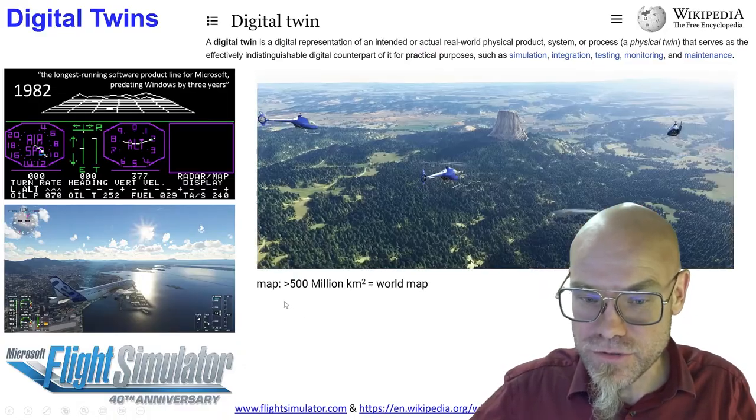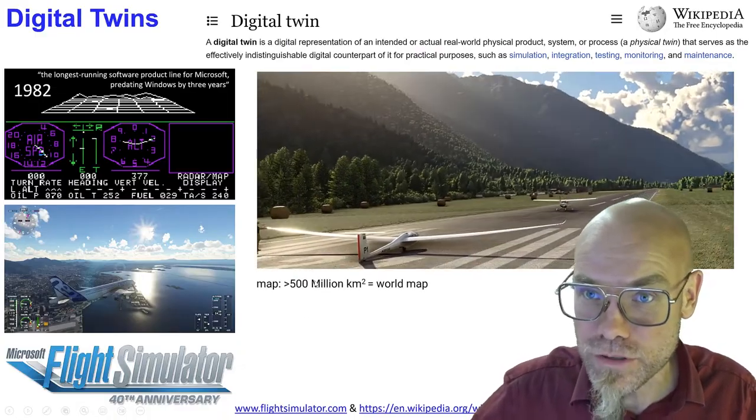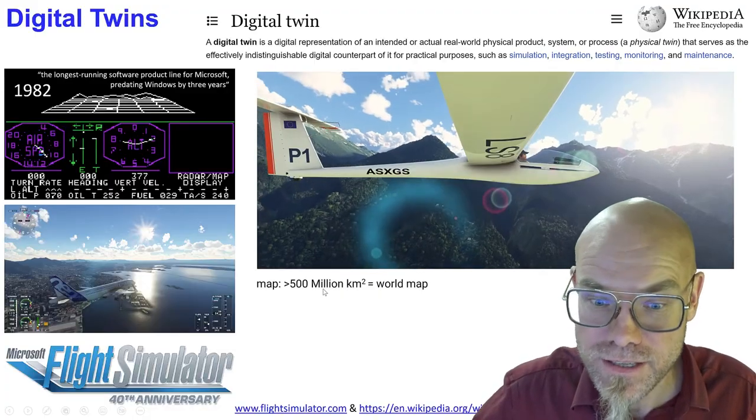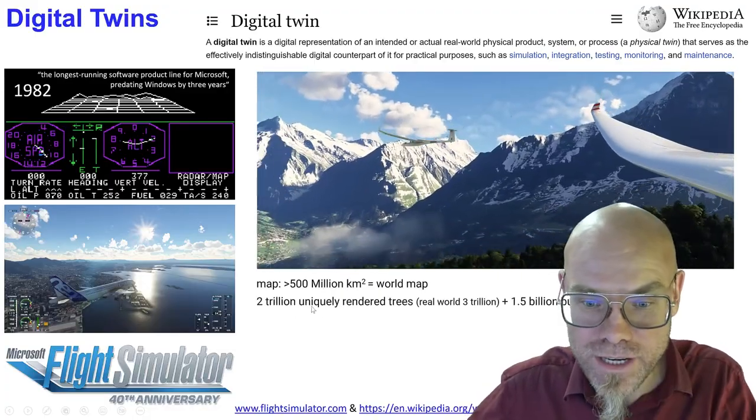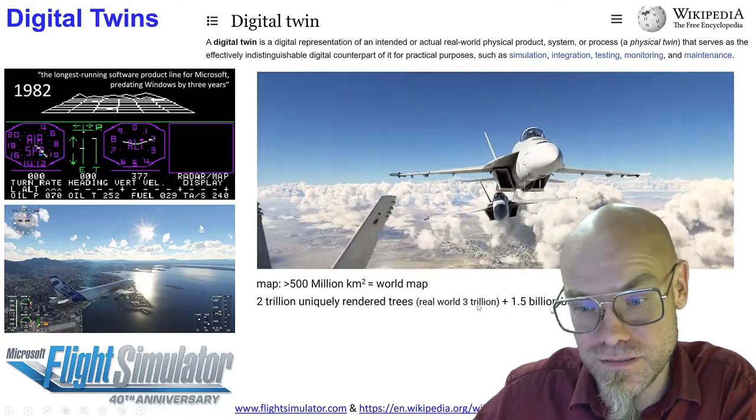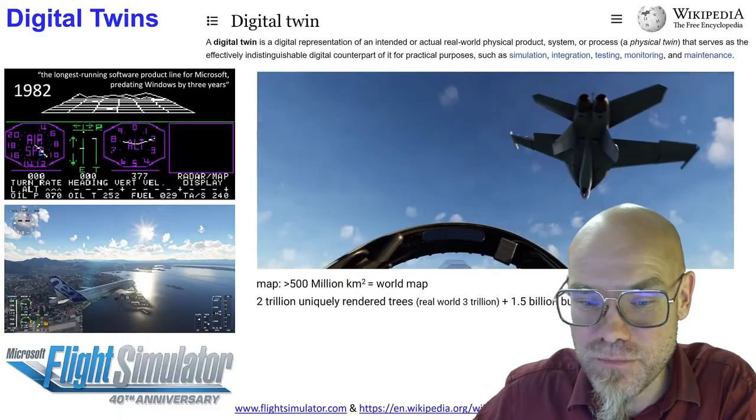And you can see in the flight simulator, it's actually amazing what you can do. It has the map of the entire world. It's basically a digital twin. You can fly over your own house in the flight simulator. It's two trillion uniquely rendered trees. Real world, there are three trillion. So it gets pretty close. And one and a half billion buildings.